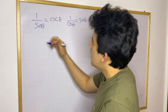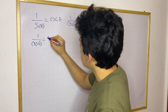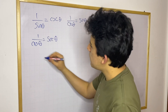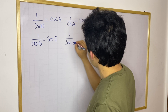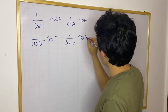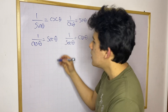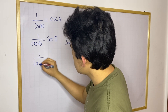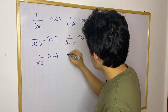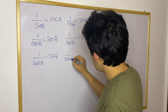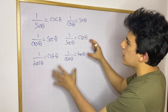More equations you need to know: if you have 1 over cosine theta, this is equal to secant theta. And similarly, 1 over secant theta is equal to cosine theta. We're also missing the equation for tangent: 1 over tangent theta is cotangent theta, and 1 over cotangent theta is equal to tangent theta. These are probably the main equations you need to know.